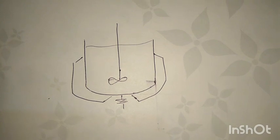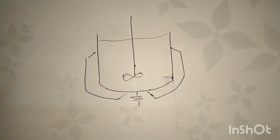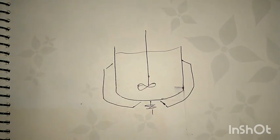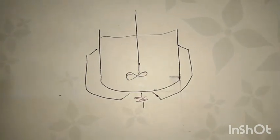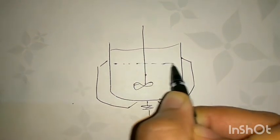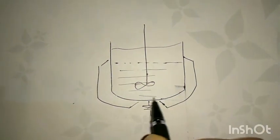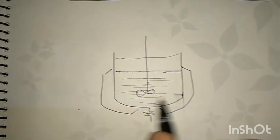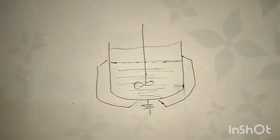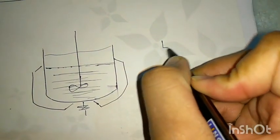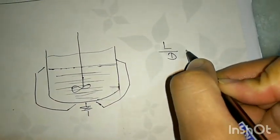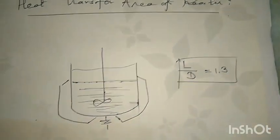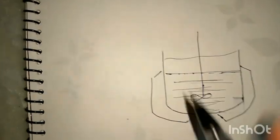To calculate the area of this reactor, we need to know the height of the reaction mass inside the reactor. There is one thumb rule: take the L by D ratio as 1.3. This is the thumb rule you need to remember.